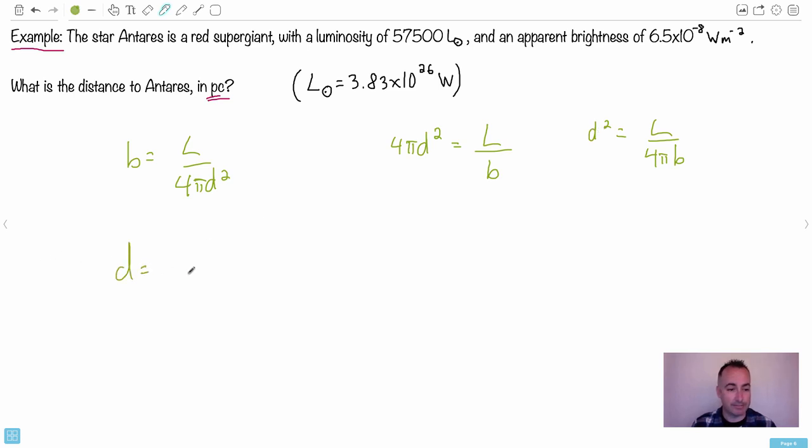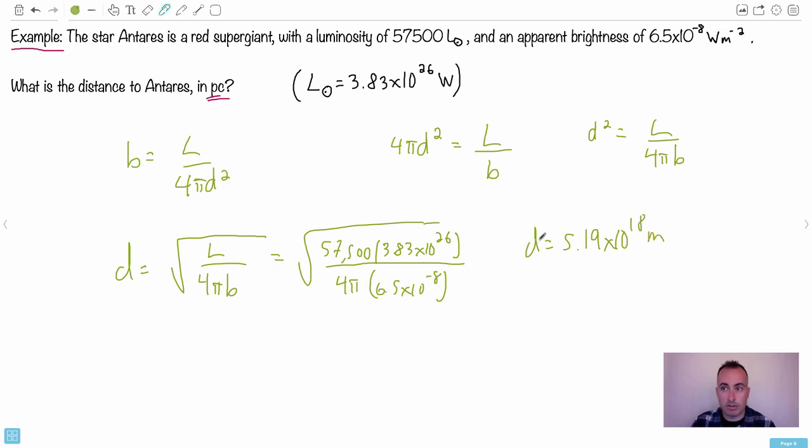And then if I want to get d by itself, it's going to be, technically plus or minus the square root, but we're only going to consider positive distances. So it's going to be the square root of the luminosity, which is 57,500, times 3.83 times 10 to the 26, because that's the luminosity of the sun. We have to multiply this value times this value. Then we go over 4 times pi times b, which is 6.5 times 10 to the minus 8. We do this on our calculator, and I'm actually going to do it right now. So I have 3.83 times 10 to the 26, and I'm going to multiply that by 57,500. Take that answer and divide it by 4 times pi. I'm going to take that answer and divide it by 6.5 times 10 to the minus 8. I'm going to take the square root of that answer, and I'm going to get a value of d equals 5.19 times 10 to the 18 meters. I do it to two significant figures.